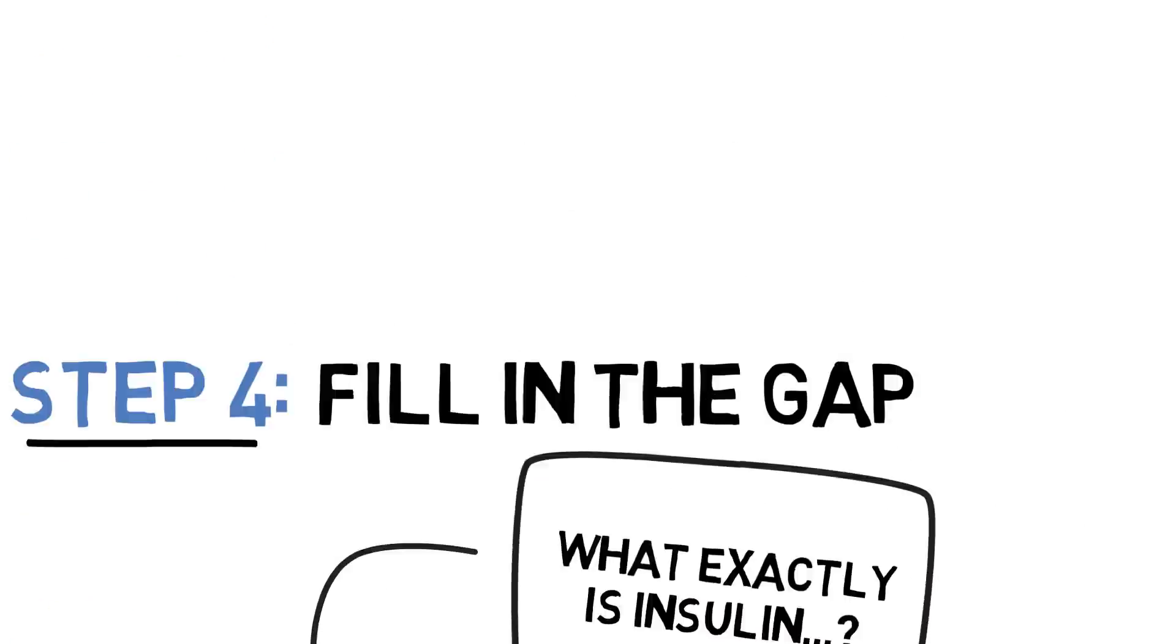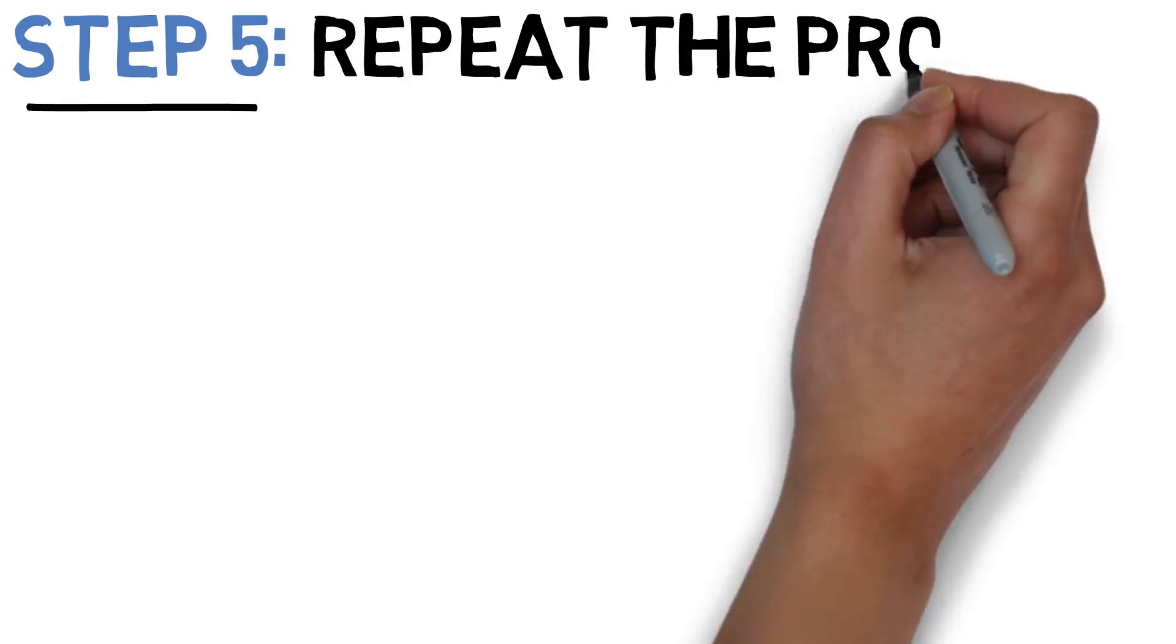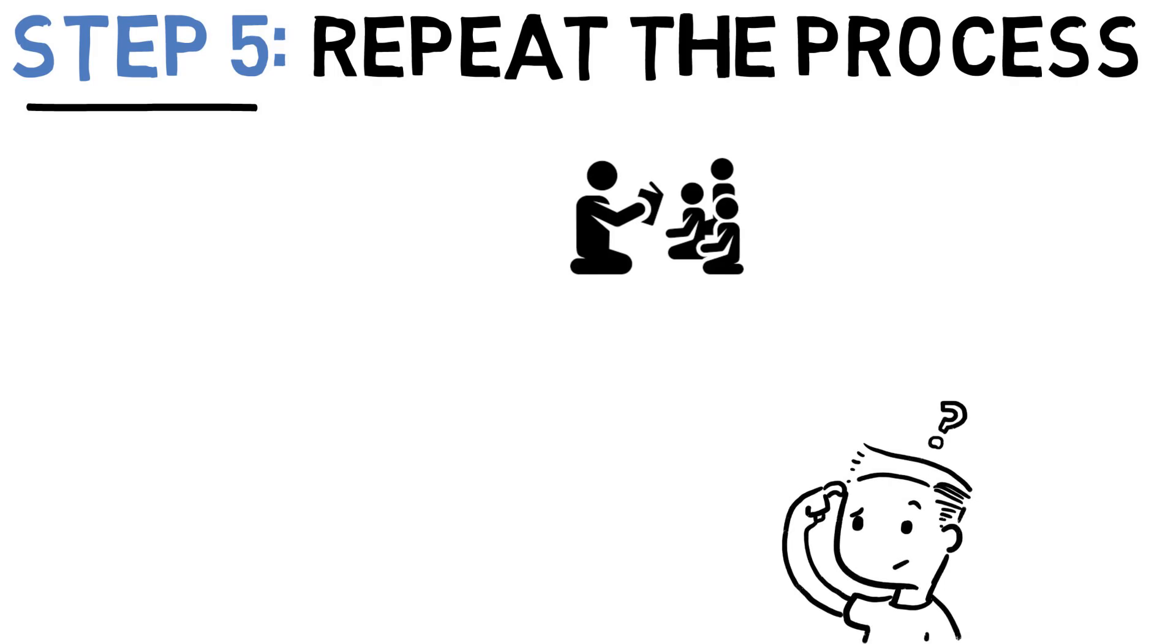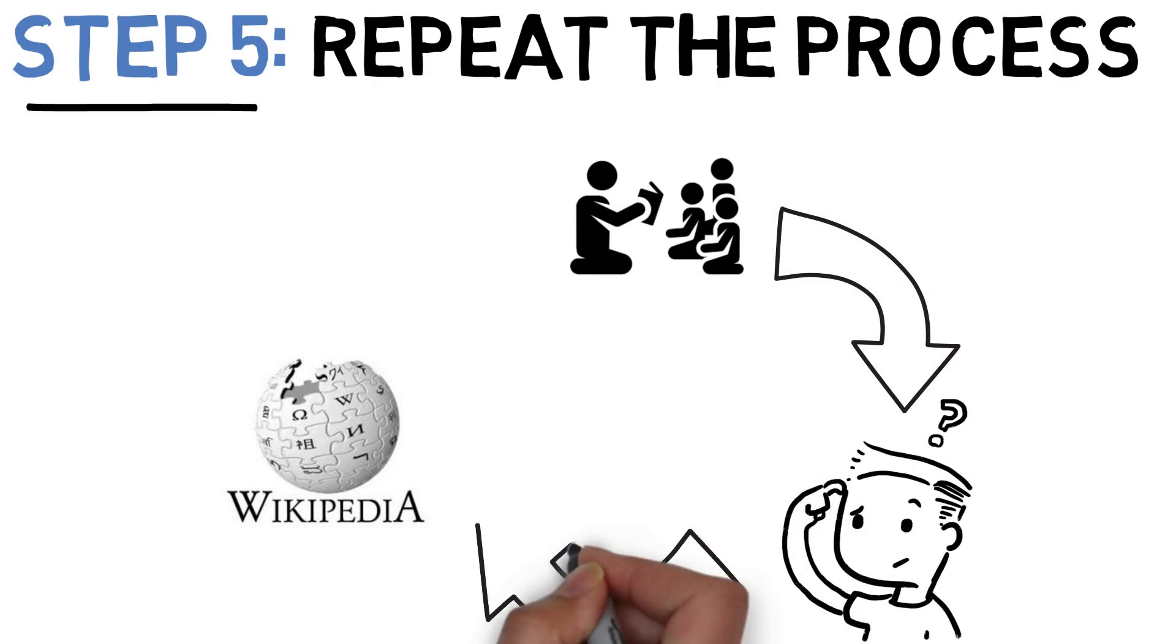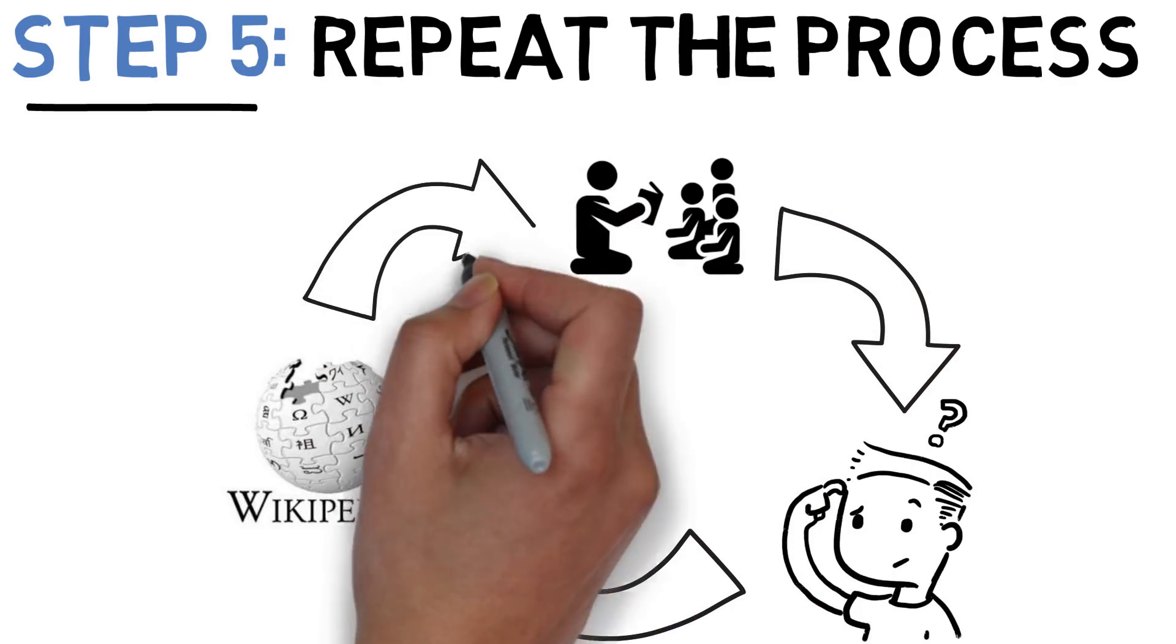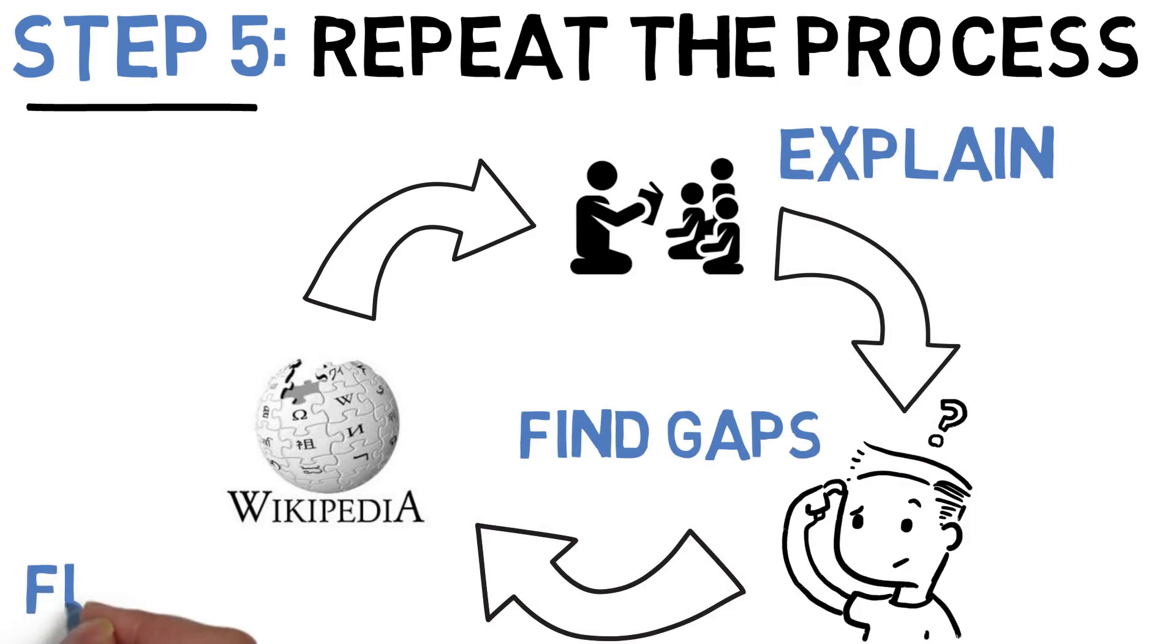The fifth and final step is to repeat the process. Each time you find a gap of knowledge in your explanation and you do more research to fill it in, you're going to have an easier time explaining this concept to your imaginary class of third graders. You want to repeat this process over and over again until finally you can explain everything there is to know about a concept to your class without using any complicated words. This ensures that you yourself have developed a deep understanding of exactly why and how a concept works.